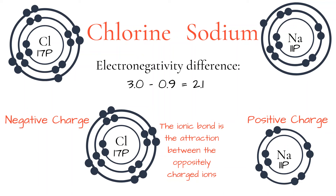If the difference in electronegativity between the two atoms forming a bond is greater than 1.6, the bond will be ionic. Here, chlorine has an electronegativity of 3, whereas sodium's electronegativity is only 0.9. As the difference between their electronegativities is 2.1 — greater than 1.6 — the bond is ionic. The very electronegative atom, chlorine, will pull sodium's valence electron and keep it. Sodium has lost its electron and chlorine has gained it. Sodium's electronegativity is so low compared to chlorine that it cannot pull the electron back, leaving sodium as a positive ion and chloride as a negative ion. The ionic bond is the attraction between the oppositely charged ions.